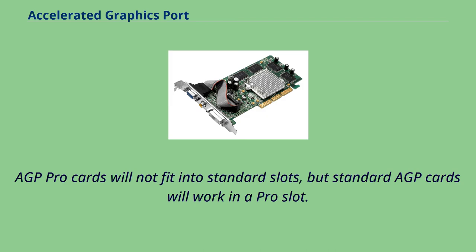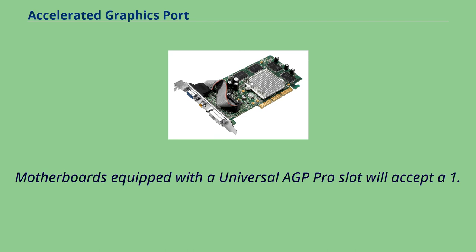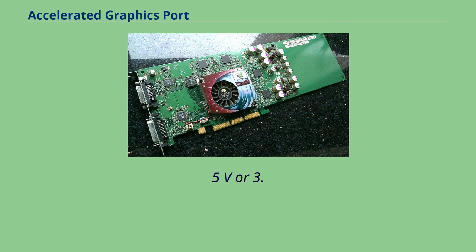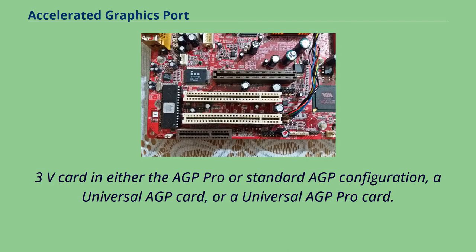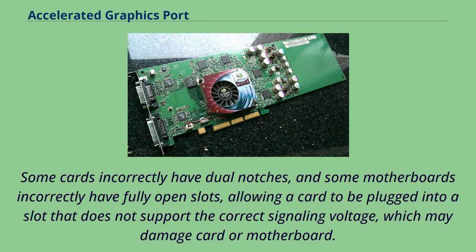AGP Pro cards will not fit into standard slots, but standard AGP cards will work in a Pro slot. Motherboards equipped with a universal AGP Pro slot will accept a 1.5V or 3.3V card in either the AGP Pro or a standard AGP configuration, a universal AGP card, or a universal AGP Pro card. Some cards incorrectly have dual notches, and some motherboards incorrectly have fully open slots, allowing a card to be plugged into a slot that does not support the correct signaling voltage, which may damage the card or motherboard.